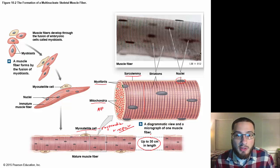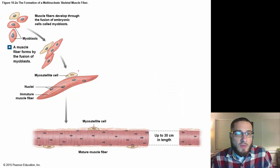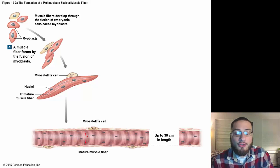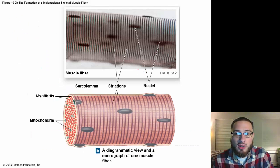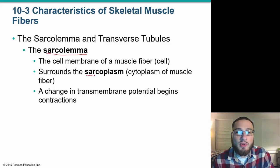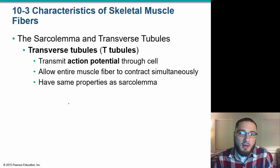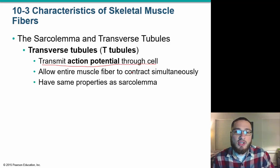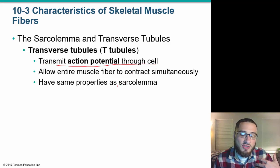These cells are very thin but can be up to 30 centimeters in length — the length of a ruler. The striations we see are characteristic of skeletal muscle tissue. Looking at a microscopic view, we see our nuclei, the sarcolemma surrounding our muscle fibers, and a cytoplasm which in muscle cells we call the sarcoplasm. We also have transverse T-tubules, which are very important in sending messages — whether to contract or relax — throughout the entire length of that muscle.